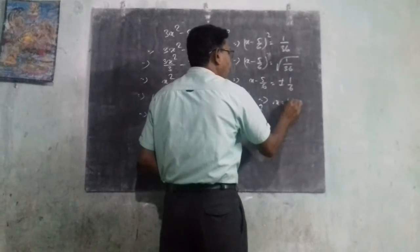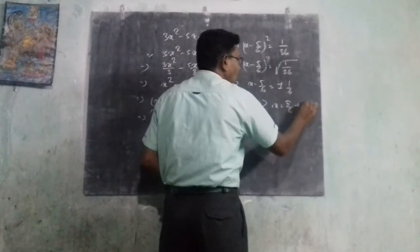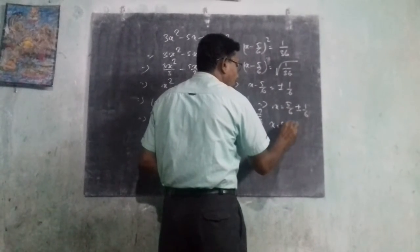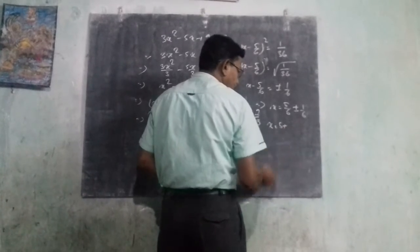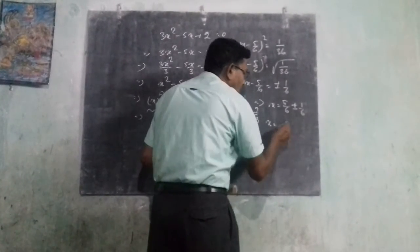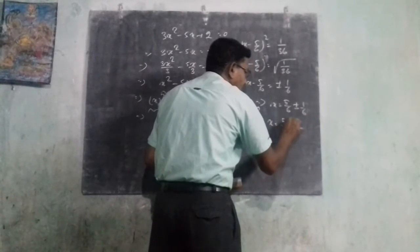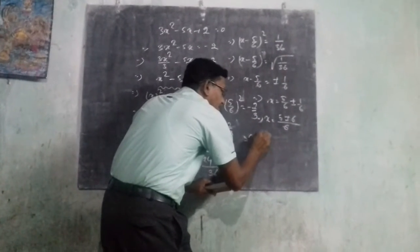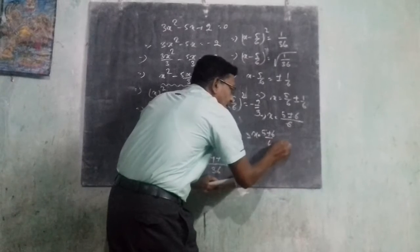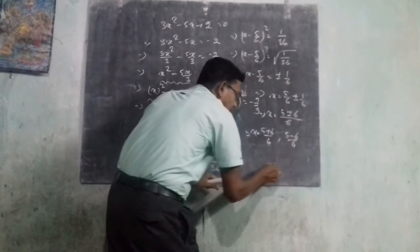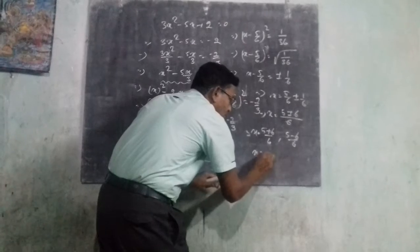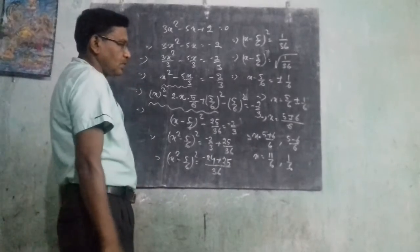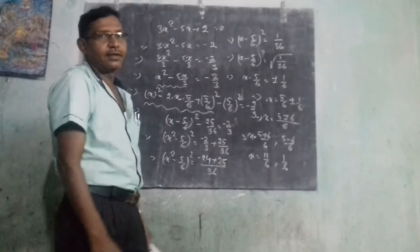So x equals 5 over 6 plus or minus 1 over 6. Taking LCM as 6: x equals (5 plus 1) over 6 and x equals (5 minus 1) over 6. So x equals 6 over 6, which is 1, and x equals 4 over 6, which is 2 over 3. These are the roots of the given quadratic equation.